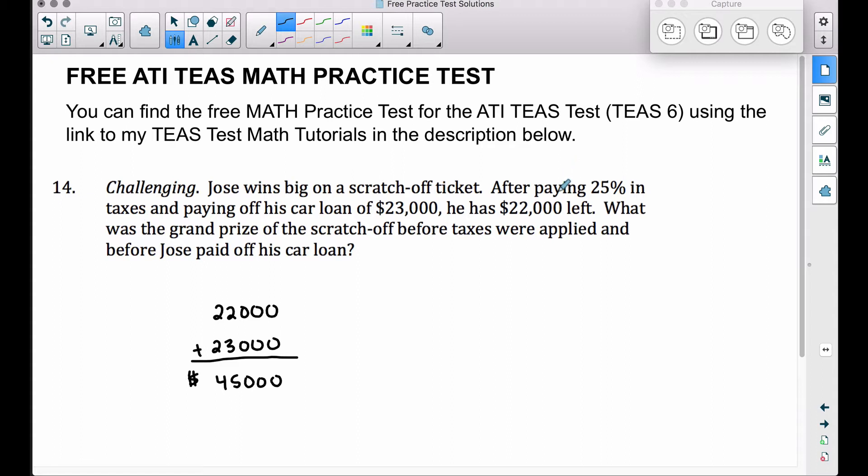So we take the $22,000 plus the $23,000, that gives us $45,000 that he had after paying 25% in taxes. So if he paid 25% in taxes, this means this $45,000 right here is actually 75% of what he won. Think about that: paying 25% in taxes leaves you with the remaining 75% of the prize money.